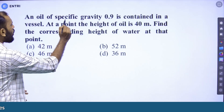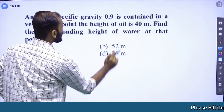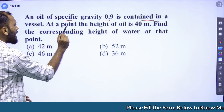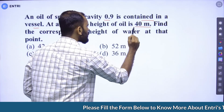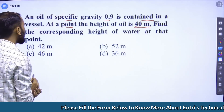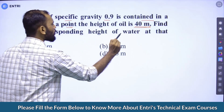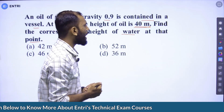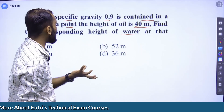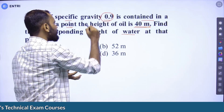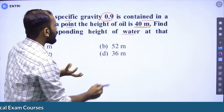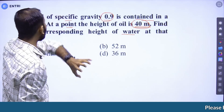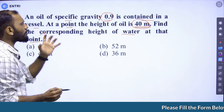Question 4: An oil of specific gravity 0.9 is contained in a vessel. At a point, the height of oil is 40 meters. Find the corresponding height of water at that point.